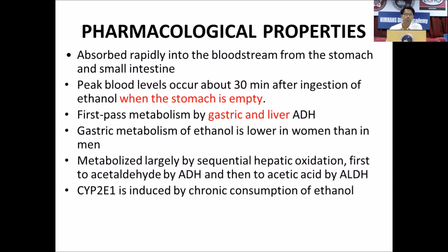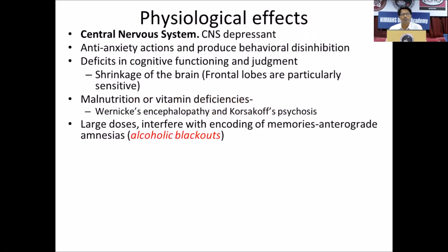Some pharmacological properties: alcohol is absorbed rapidly from the stomach and small intestine with fast metabolism by alcohol dehydrogenase. Gastric metabolism of ethanol is lower in women than in men, which is why females usually get early toxic effects of alcohol. Metabolism occurs largely through sequential hepatic oxidation in the liver. The enzyme CYP2E1 is also induced by chronic alcohol consumption; drugs metabolized by CYP2E1 have enhanced metabolism in chronic alcoholism, requiring higher doses.